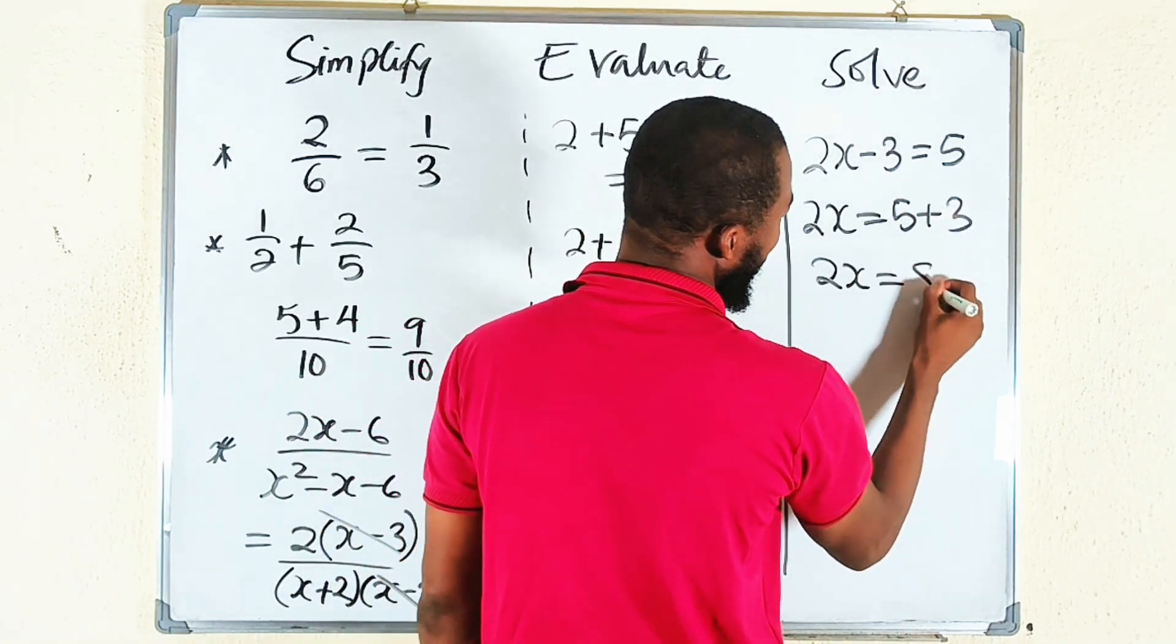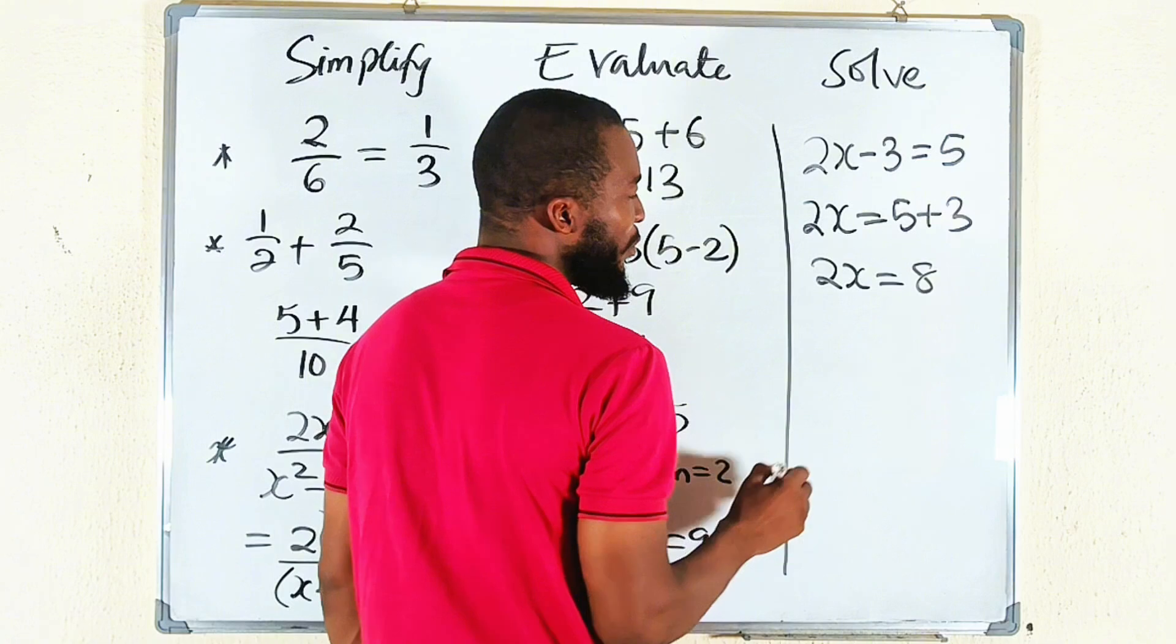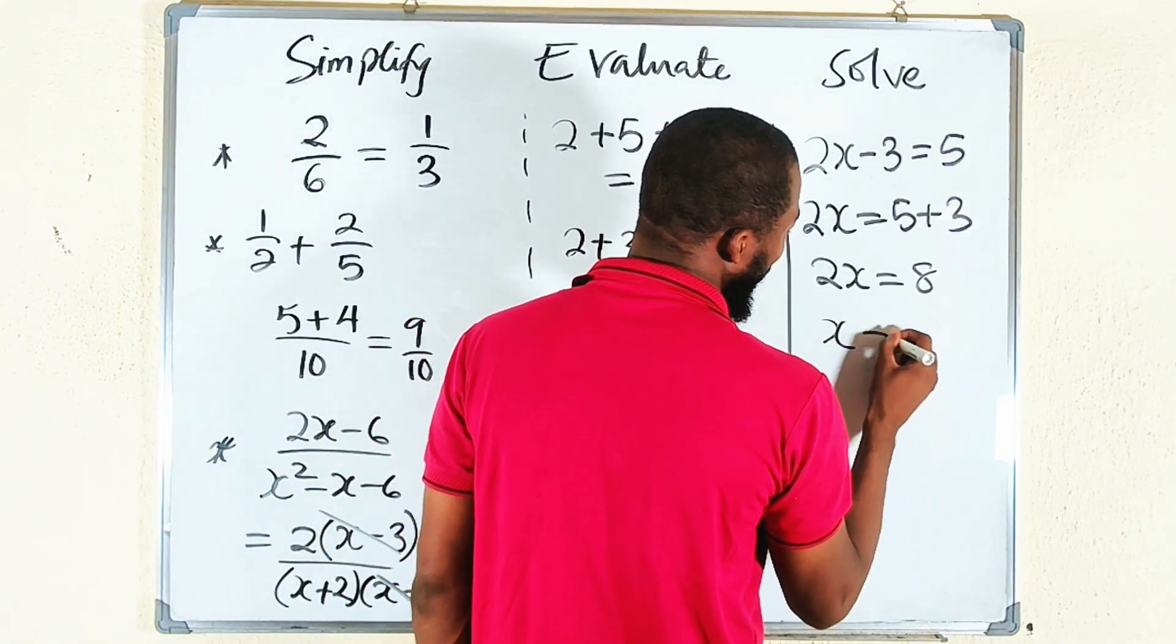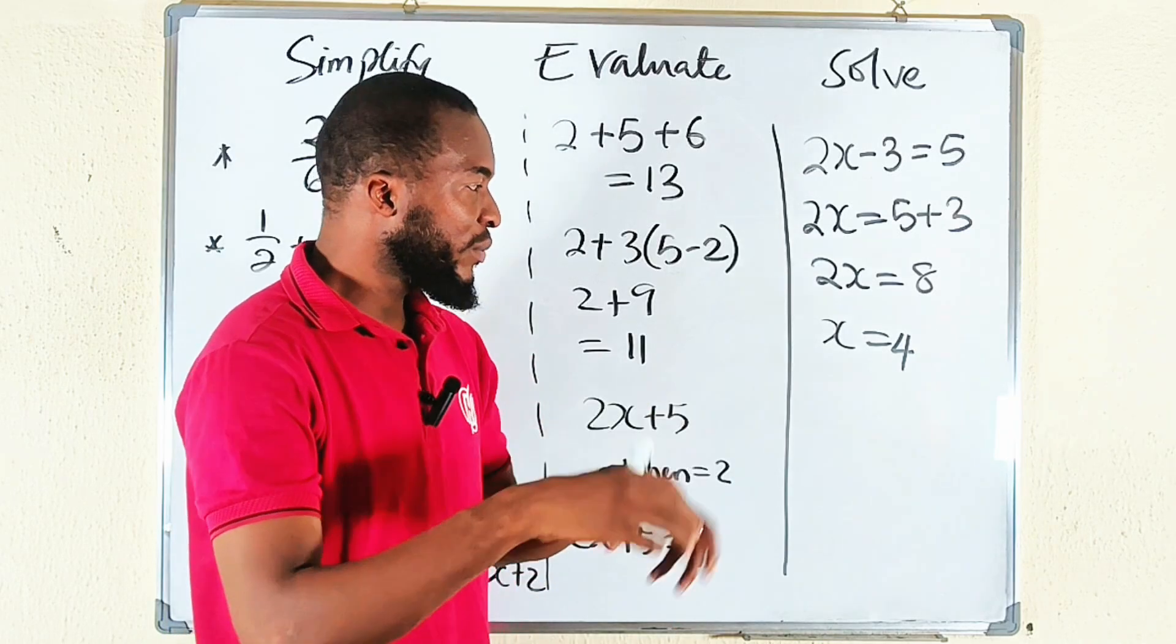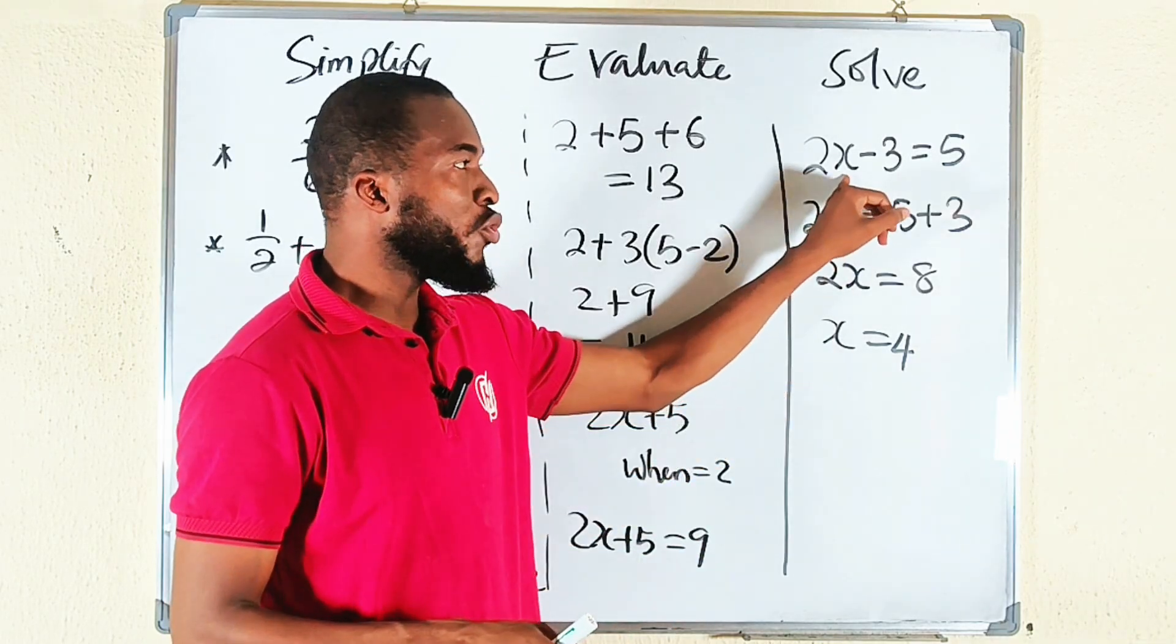And if you divide both sides by 2, you have x equal to 4. So whenever they say you should solve, your teacher is expecting from you the value of that unknown in that given equation that will make the statement true.